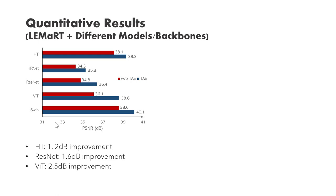We show that Lamart can work with different image harmonization models and backbones. Specifically, we apply Lamart to HT and also to ResNet and ViT backbones. We see that Lamart results in a 1.2 dB performance improvement for HT, a 1.6 dB improvement for ResNet, and a 2.5 dB improvement for ViT.